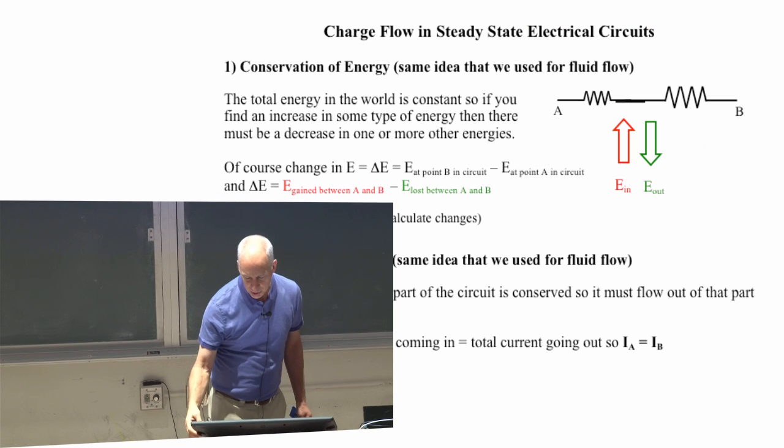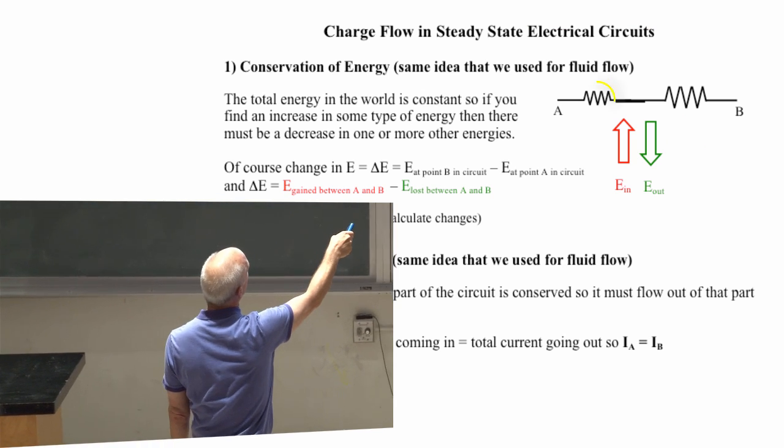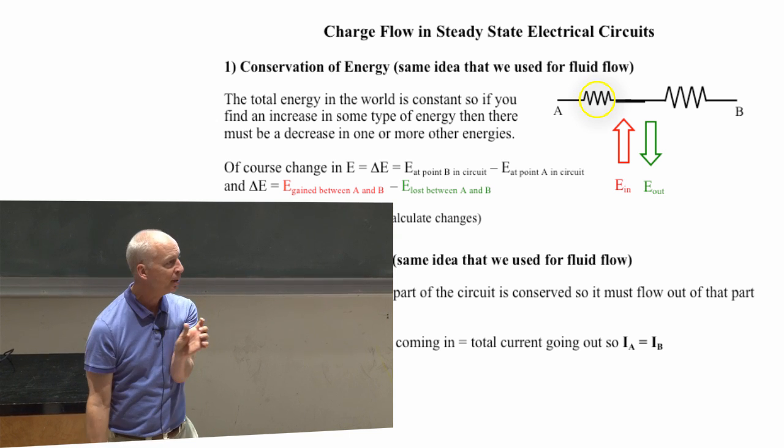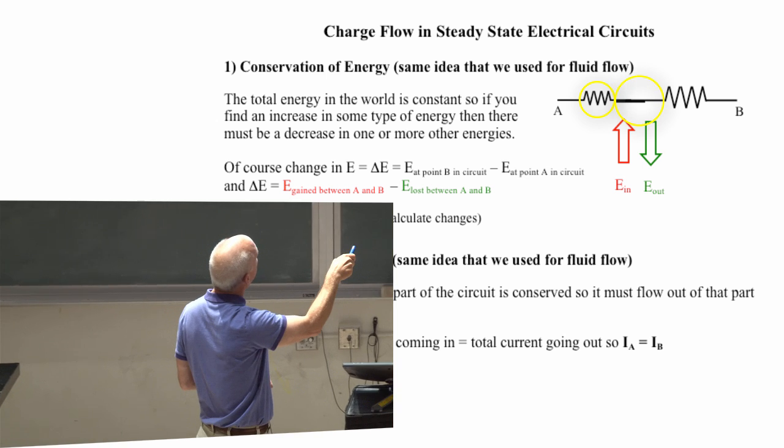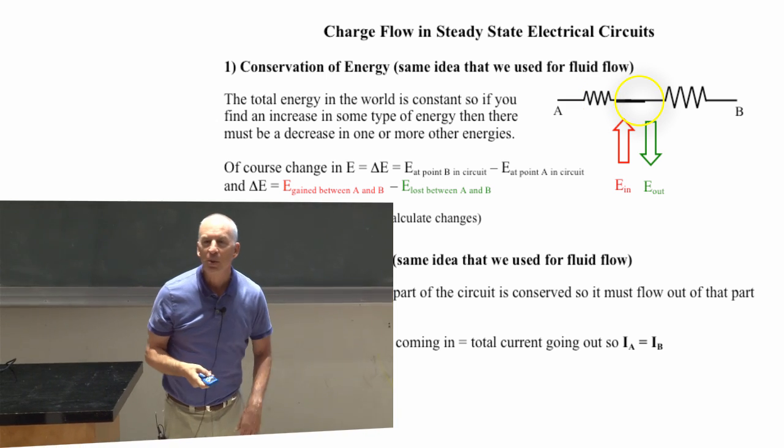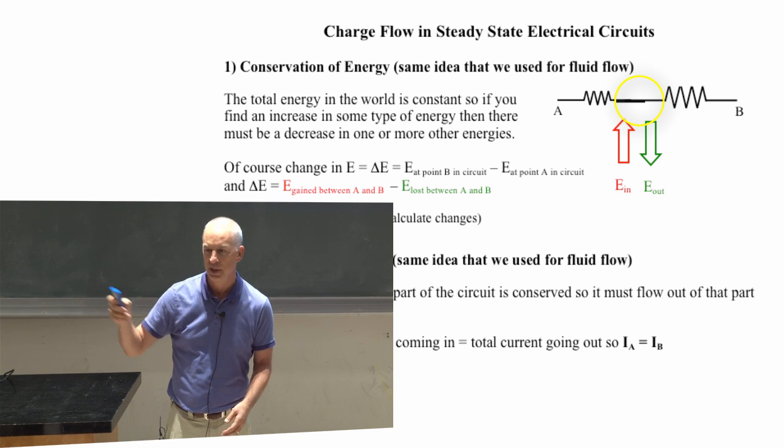Same thing is true for electrical circuits. There are places where there will be resistance. We put it in on purpose. We call that little thing we stick in there a resistor. And we connect it to other wire, with other wires to other things.